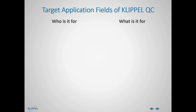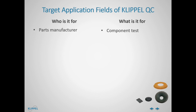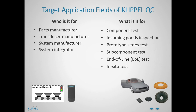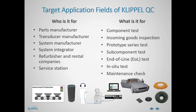The whole quality control chain already starts with the parts manufacturer and component testing of suspension parts. The main field of application is of course transducer and audio system manufacturing, ranging from incoming goods inspection of parts and transducers, prototype series testing over subcomponent and finally end-of-line testing. System integrators will be mainly interested in in-situ tests that are not only relevant for prototyping but also for quality assurance and production. Refurbishers, rental companies, and service stations need an objective tool for regular maintenance checks or after repairs. The Clipple QC is also relevant for customers of the Clipple-controlled sound, but this is not our focus topic in this video.